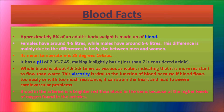The mean temperature of blood is around 38 degrees Celsius. Whole blood is about 4.5 to 5.5 times as viscous as water, indicating it is more resistant to flow. It has a pH of about 7.35 to 7.45, making it slightly basic. Blood in the arteries is a brighter red than blood in the veins because of the higher level of oxygen found in arteries, as arteries carry oxygenated blood.